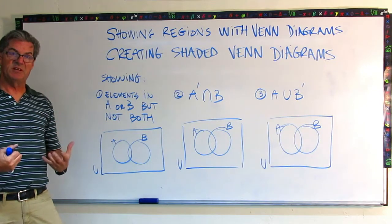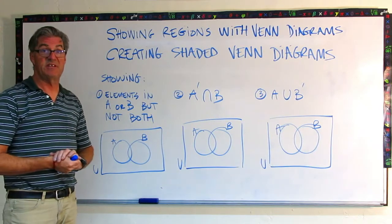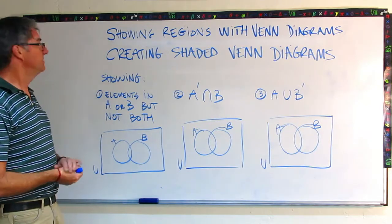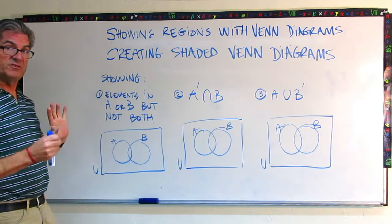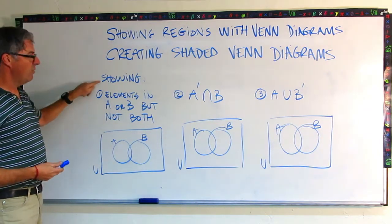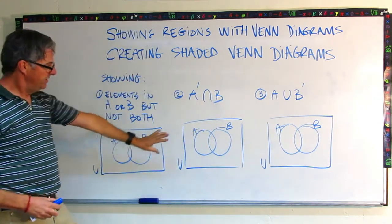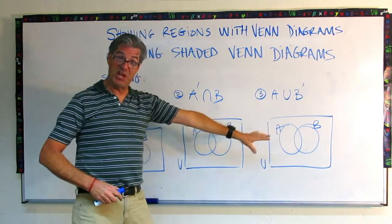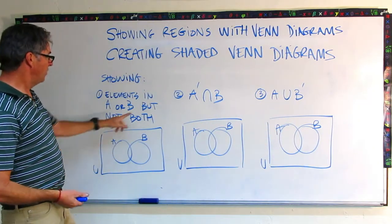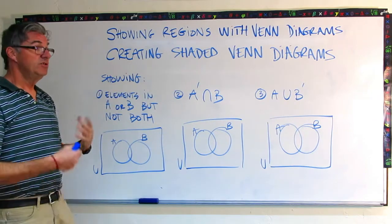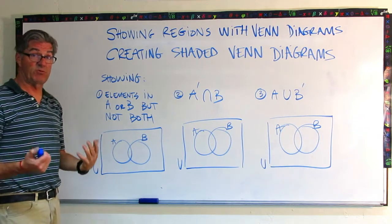So let's use some of these concepts to create some shaded Venn diagrams, which is the bulk of the exercises that you'll be working through in this particular lesson. So this title here is creating shaded Venn diagrams. So we're going to do three of those. Here's what I want you to show. One, two, three, three examples. I've already put some blank, some unshaded Venn diagrams ready to go. So you can see from that that we're comparing two sets, two subsets of our universal set, and we're going to shade some regions.